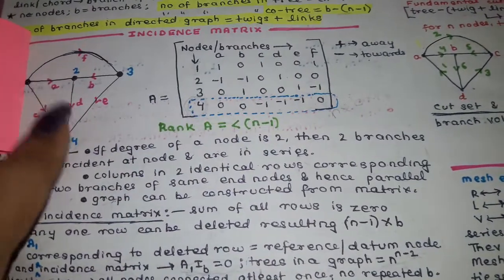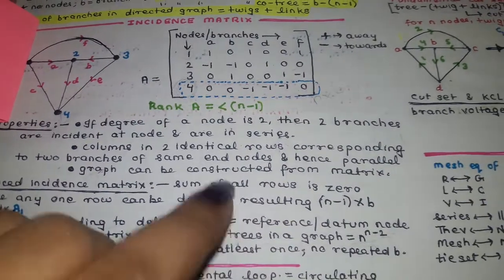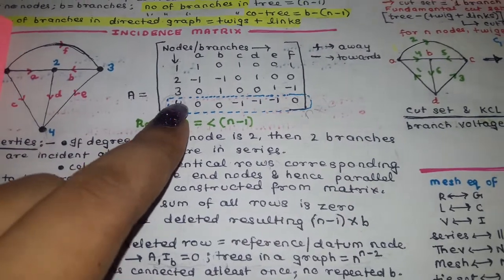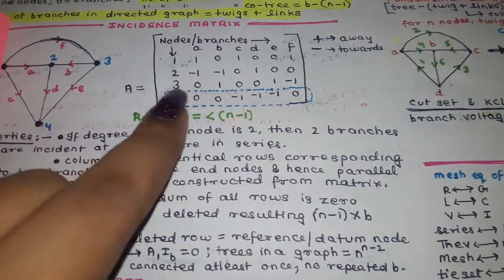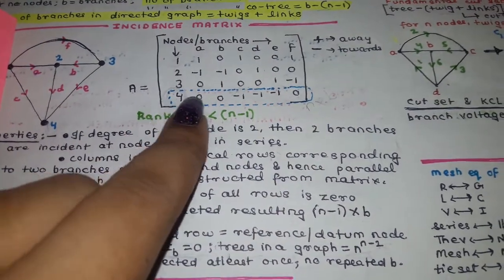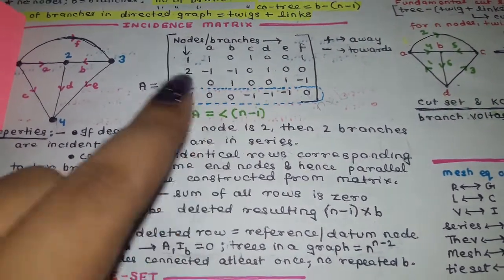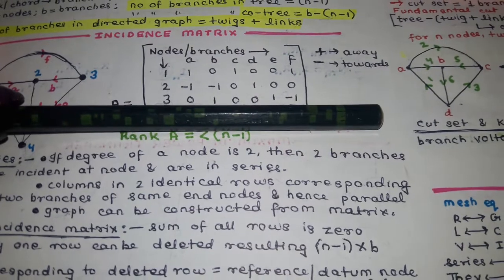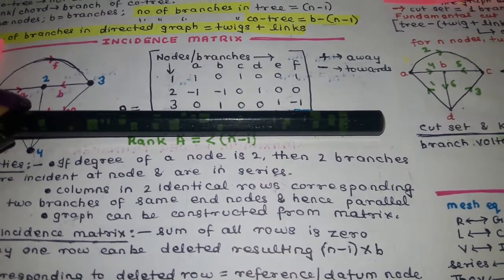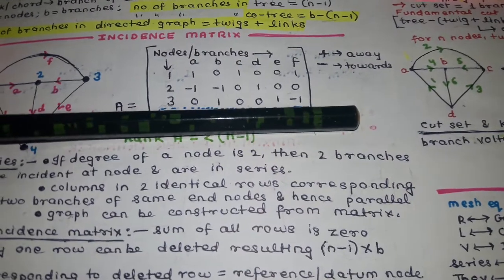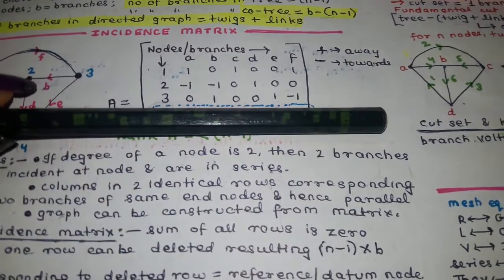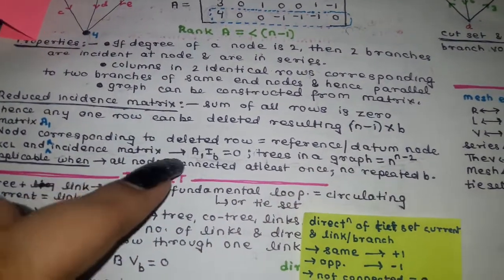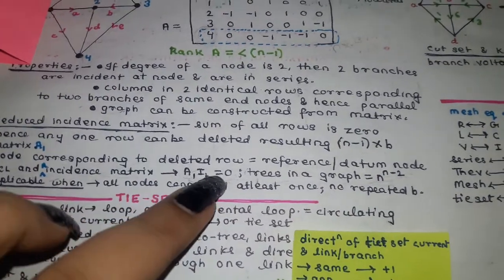Now let's talk about the reduced incidence matrix. A key property of the incidence matrix is that the sum of all its rows equals zero. Because of this, you can eliminate one row and still reconstruct the full matrix. Deleting one row gives the reduced incidence matrix. The node corresponding to the deleted row is called the reference node or datum node.